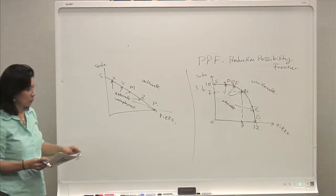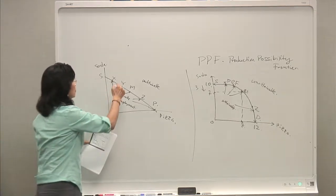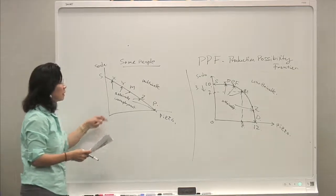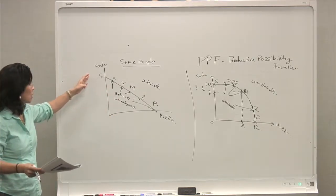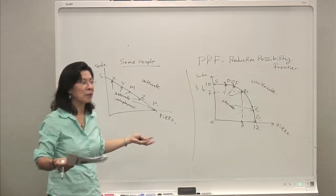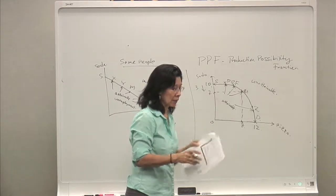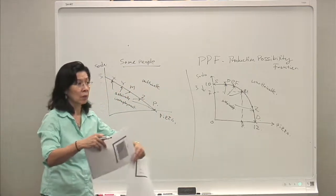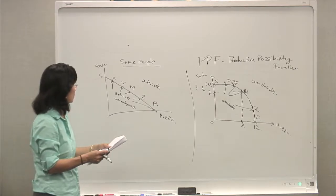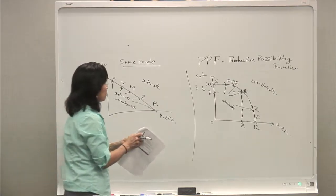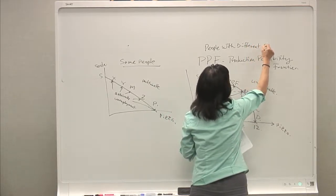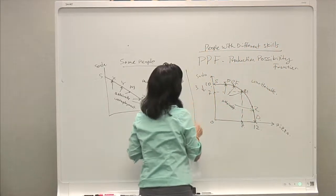It turns out the straight-line PPF is the case when people have the same kind of skills, so the trade-off is uniform. What society has everyone with the same skills? The bowed-out curve is when people have a variety of different skills, so how you make decisions is quite different.